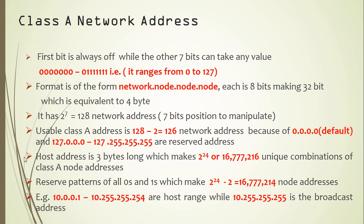In a class A network address, the first bit is always off. This means the range goes from 0 to 127. If I convert the binary to decimal, the minimum is zero and the maximum is 127. The first bit is always off while the other seven bits can take any value from zero and so on. So that means if you see any address that starts from 0, 1, 2, 3, 4, up to 127, that kind of address is a class A network address.